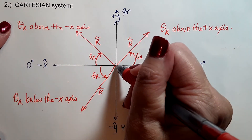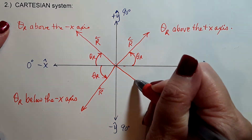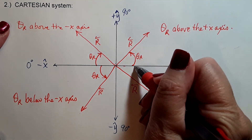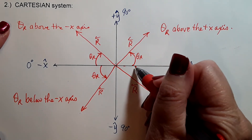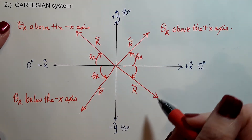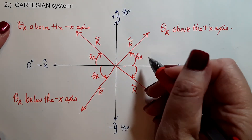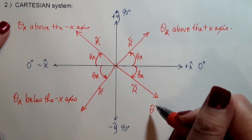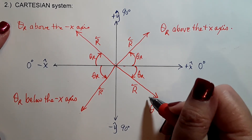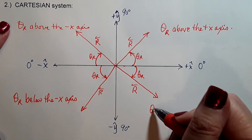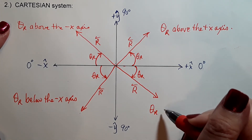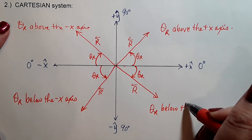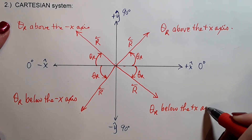For the fourth quadrant, if this is our resultant r, we start at the closest horizontal — positive x — because that's where zero degrees is. We measure around towards 90 degrees, and we state the direction with the magnitude as so many degrees below the positive x-axis.